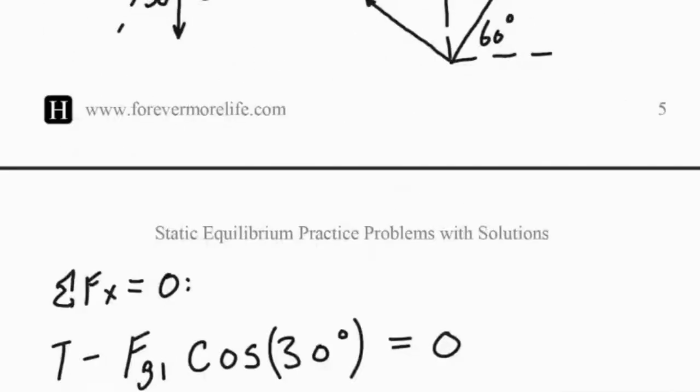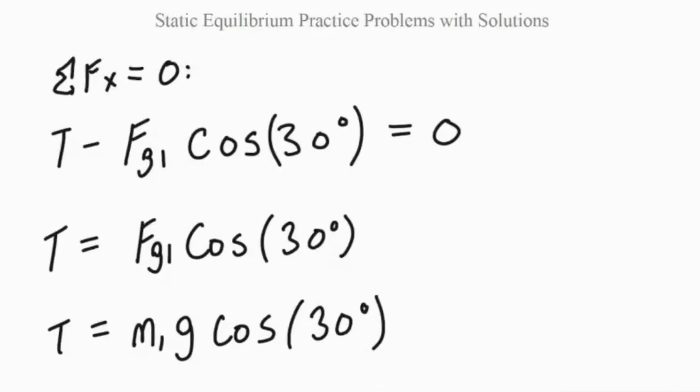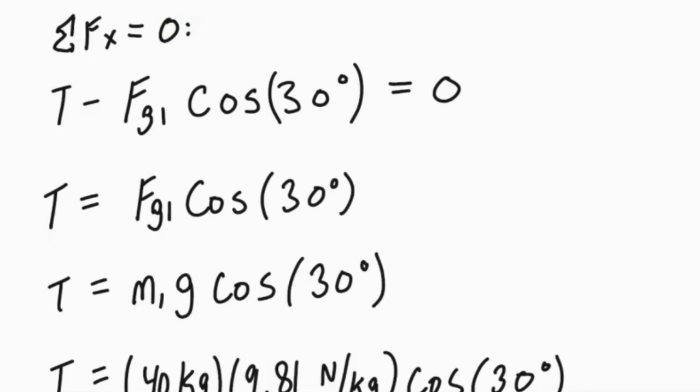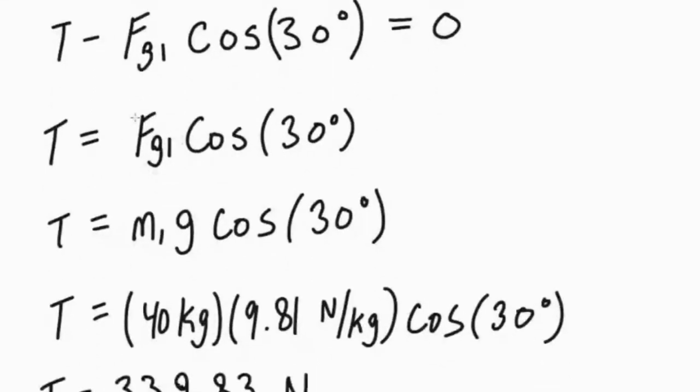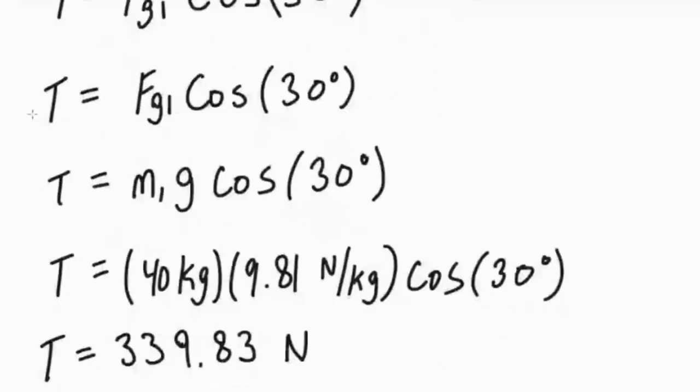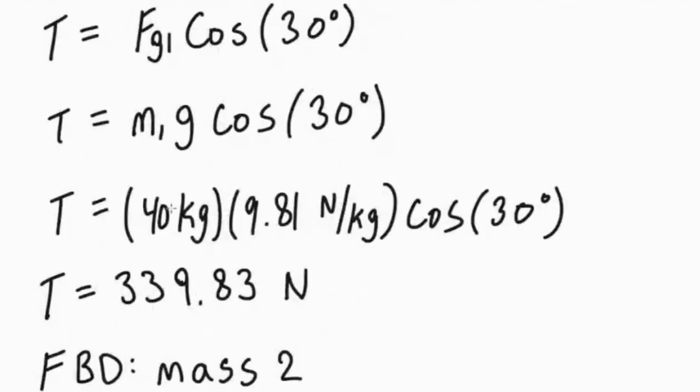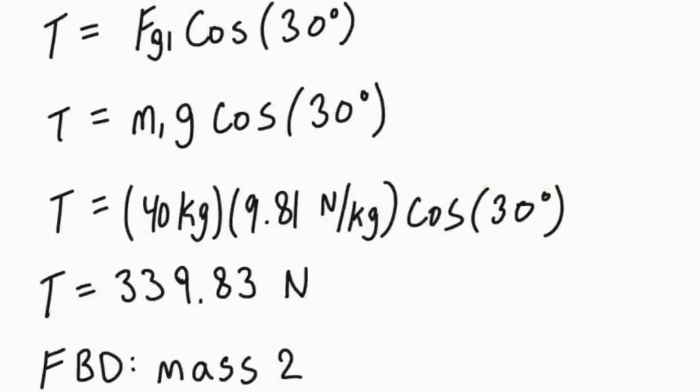So if we start with our sum of forces in the X direction, we'll have T minus FG1 cos 30 equal to zero. We want to solve for that tension so we can bring this term over the right hand side. Once we've done that, we can replace our force of gravity with M times G. We know the value for the mass and our value for G, 9.81, so we can plug those numbers in there and get a value for our tension.